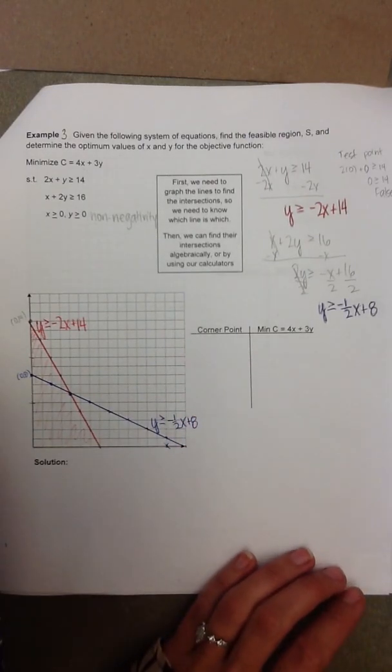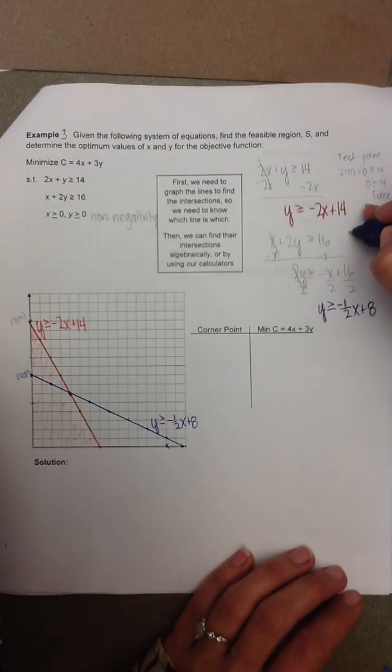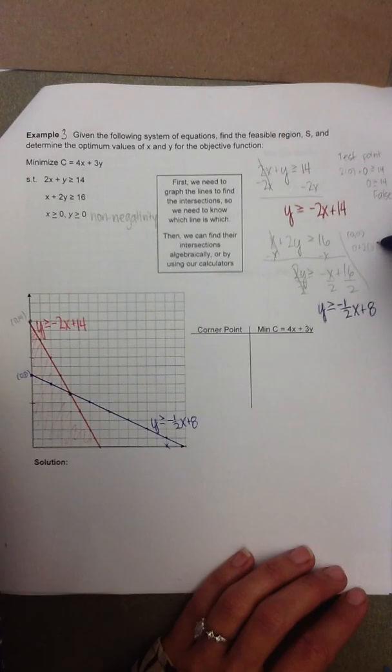Once again, we need to plug in a test point. I like 0, 0. And I plug it into the original inequality in general form. So 0 plus 2 times 0 is greater than or equal to 16. 0 greater than or equal to 16 is false, once again.